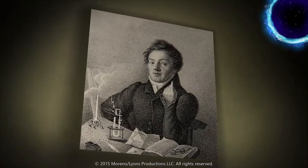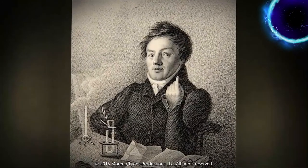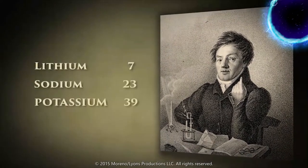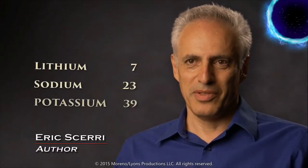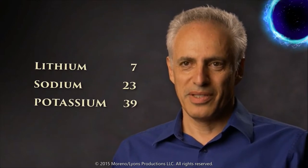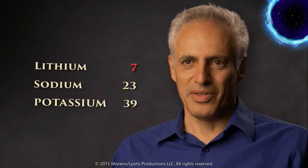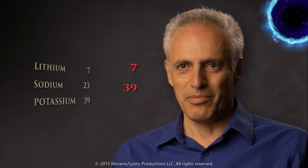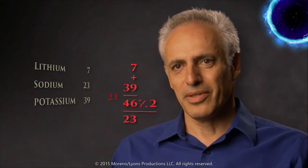In 1817, more than 50 years before Mendeleev's first table was published, a German chemist named Johann Döbereiner noticed a mathematical pattern in groups of three elements he called triads. One of the triads involves lithium, sodium, and potassium — three very similar elements. If you take the weight of lithium, the top member of that triad, and add it to the weight of potassium, the bottom member, and divide by two, you get approximately the weight of the middle element, sodium.